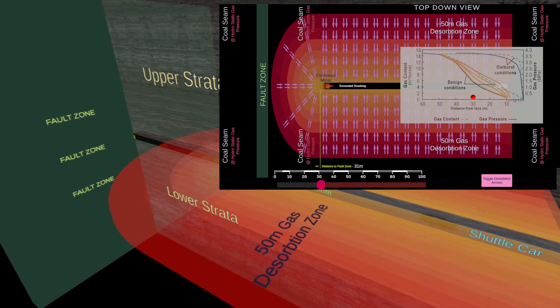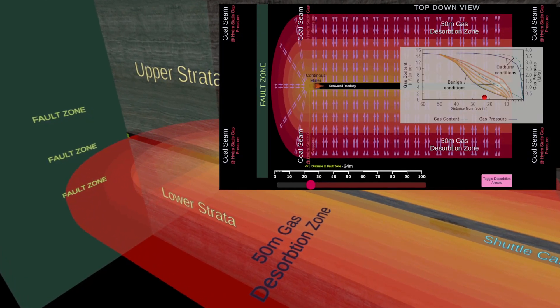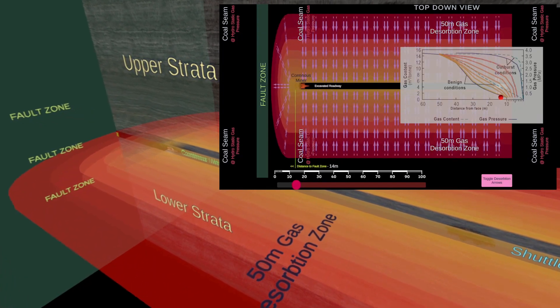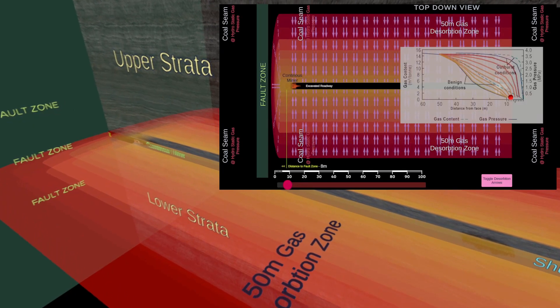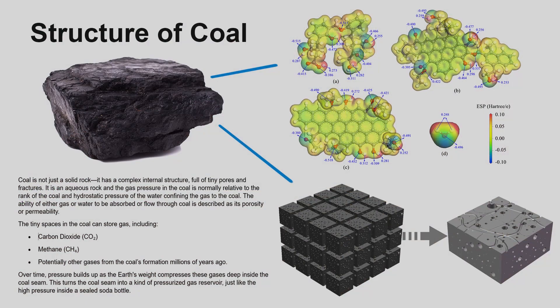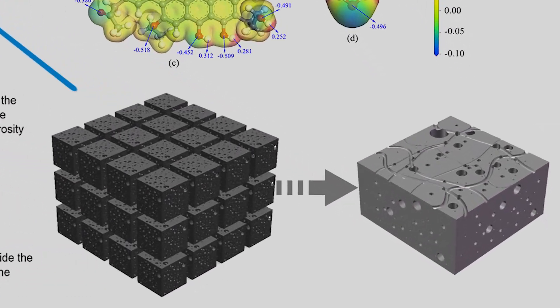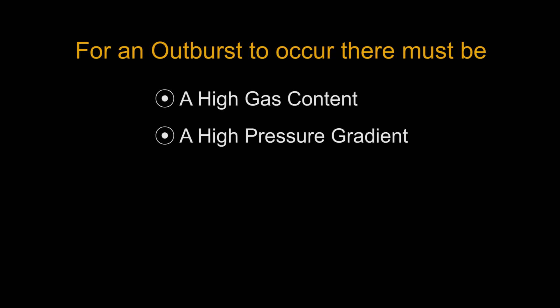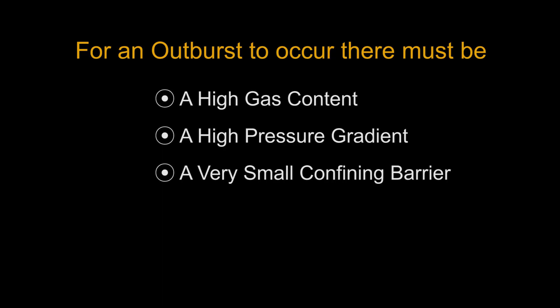Outburst conditions exist when a gas pressure gradient is created which exceeds the coal or strata tensile strength, resulting in a rapid and violent ejection of the gas and the coal from the face. The finer the particles of coal from the geological disturbance, the greater the rate of desorption of the gas when the coal is ejected and released. For an outburst to occur, there must be a high gas content, a high pressure gradient, and a very small confining barrier present.